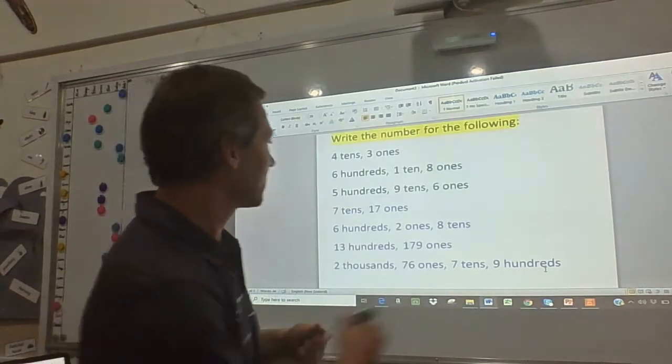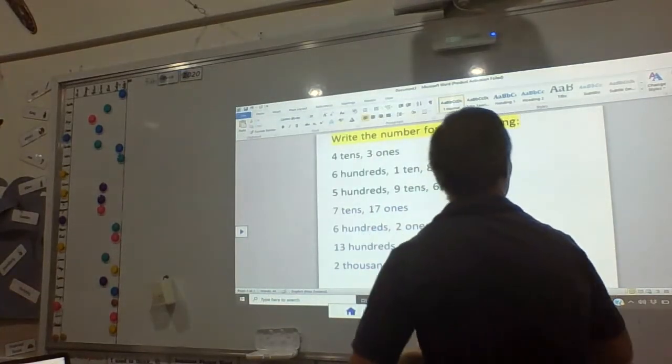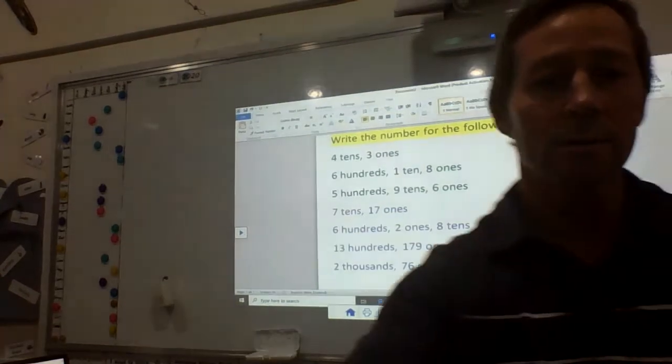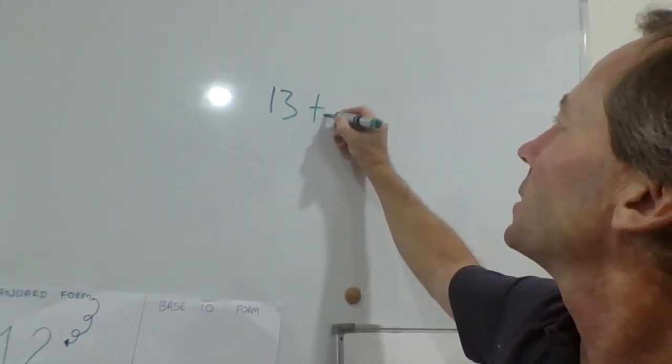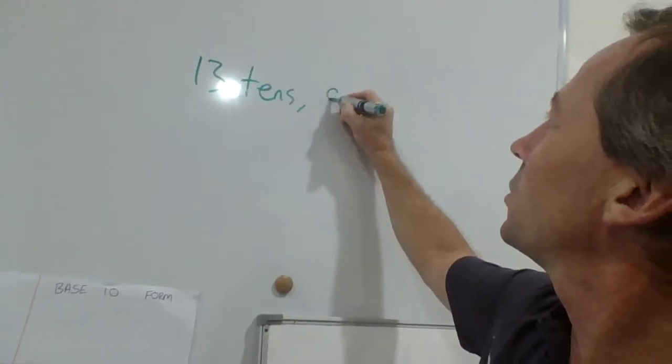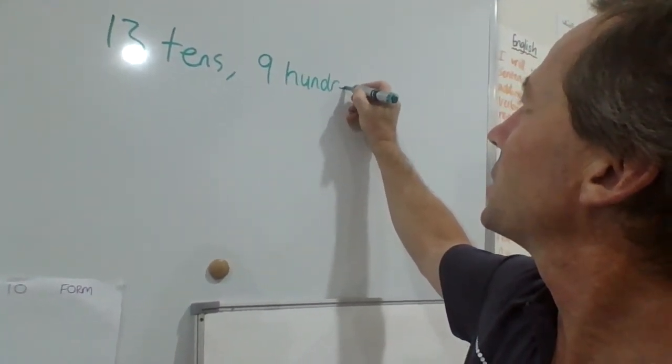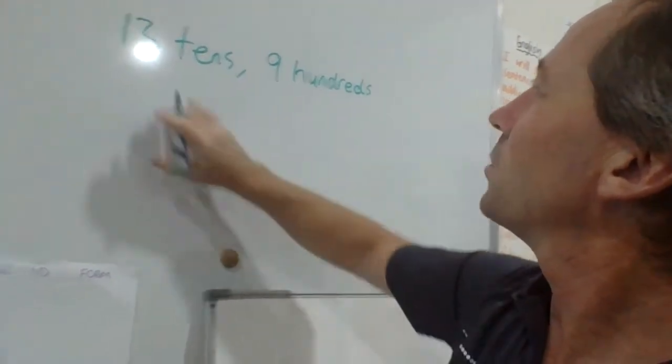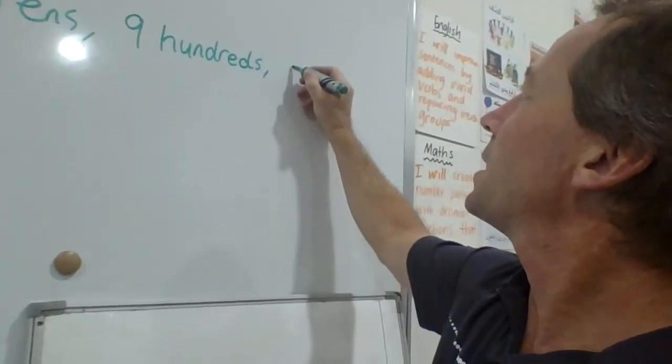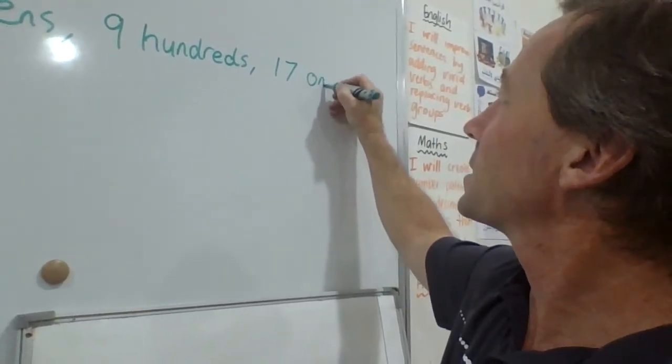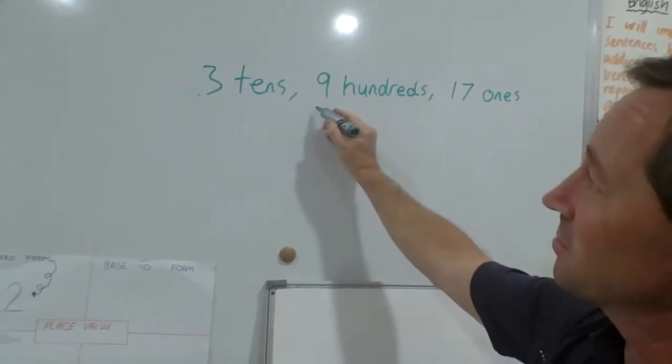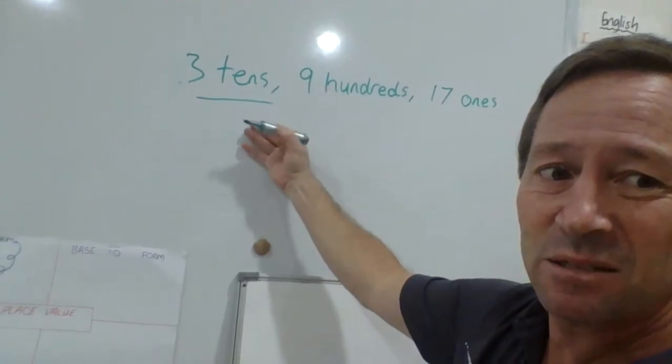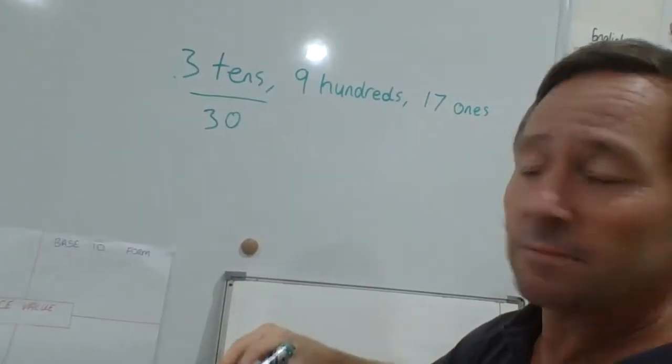So I'll do one. I'm going to do this little example over this side here. We'll make up something: 13 tens, 9 hundreds - we'll make it 3 tens and 17 ones. Now with that in mind, obviously I need to start with the biggest one. So we've got 3 tens, so 3 tens would be equal to 30. Nine hundreds - 900.